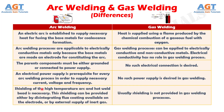Difference number 5. In arc welding, shielding of the high-temperature arc and hot weld bead is necessary. This shielding can be provided either by disintegrating flux coating available on the electrode or by external supply of inert gas, but usually shielding is not provided in gas welding processes.